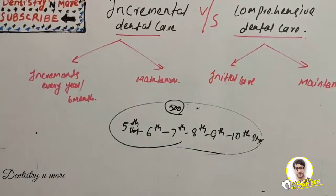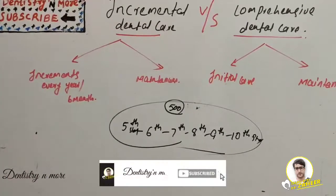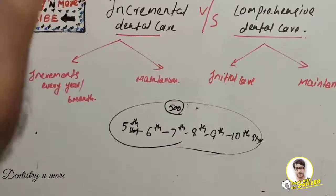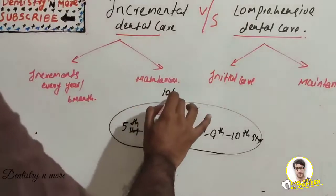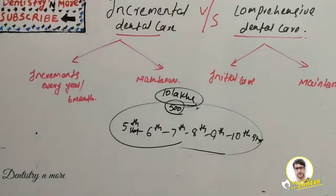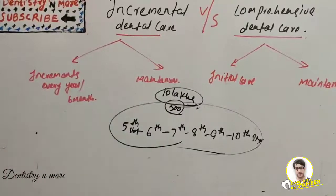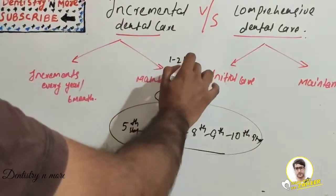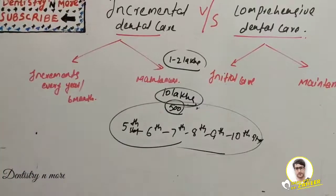We are planning to provide dental care for this group and we need good funding, good workforce, and all other criteria. We conducted a survey and found that many students' teeth require restoration, oral prophylaxis, and some students need root canal therapy and crown replacement. Altogether this may reach a very large sum — suppose around ten lakh rupees. But right now we only have around one or two lakhs.